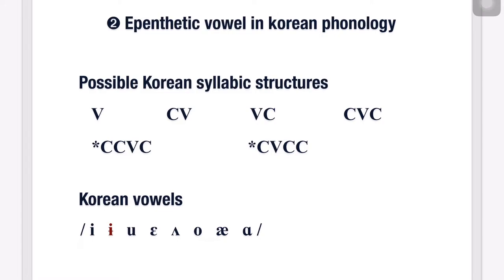Now that we learned what the epenthetic vowel is, let's move on to how and why it occurs in Korean phonology. Epenthetic vowel does not occur without any reason. Its occurrence stems from the syllabic structure rule of the Korean language as it blocks certain syllabic structures. For example, while the structures V, CV, VC, and CVC are possible in Korean, CCVC and CVCC are impossible.